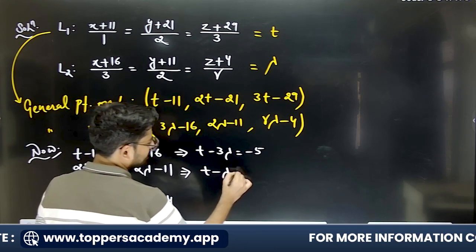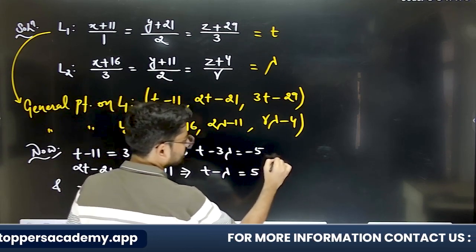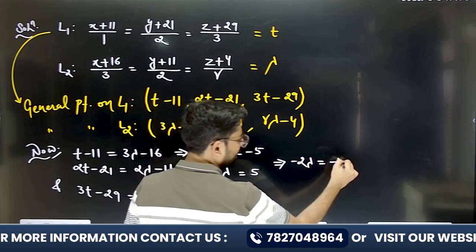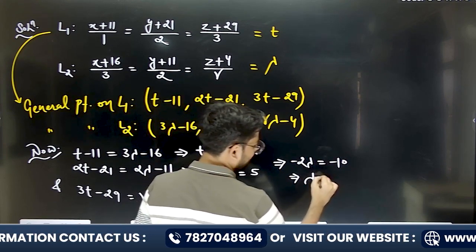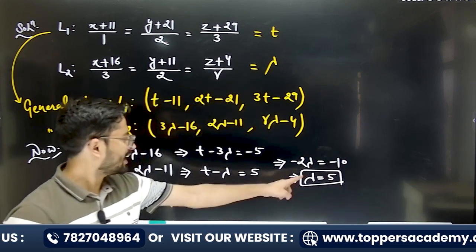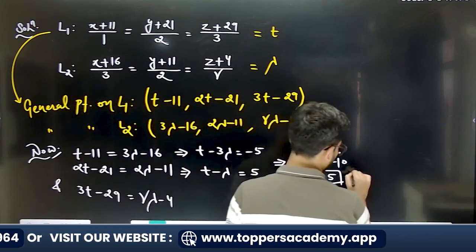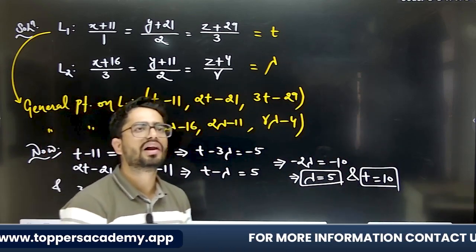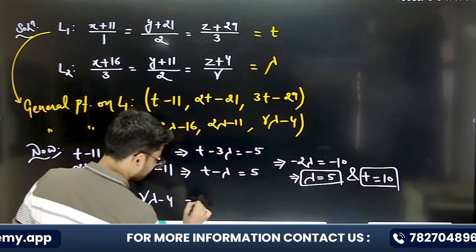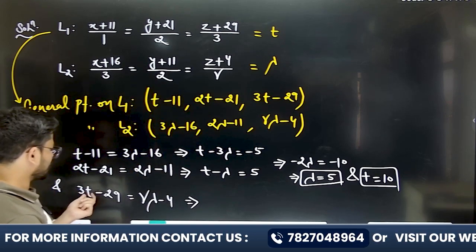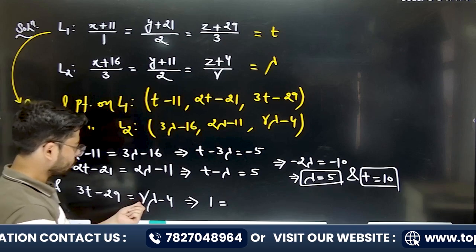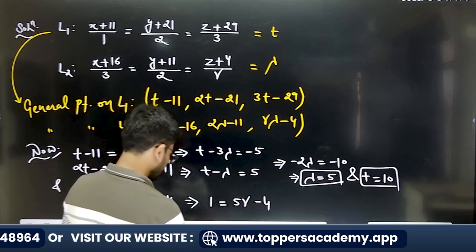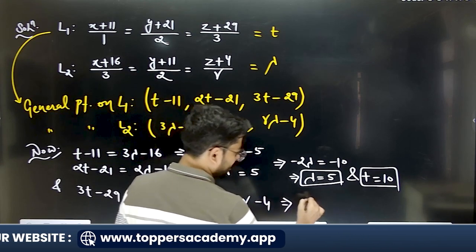Subtracting the two equations: −2λ = −10, so λ = 5. Substituting back gives t = 10. Putting t = 10 into the z-coordinate of l1: 3(10)−29 = 1. And from l2's z-coordinate: 5γ−4 = 1, so γ = 1.